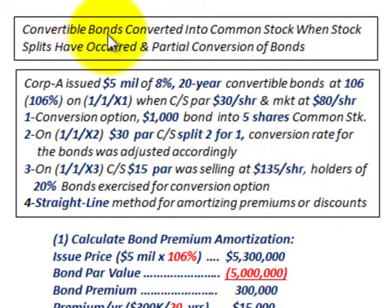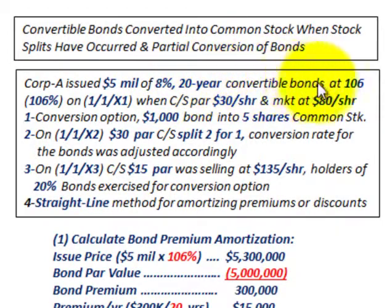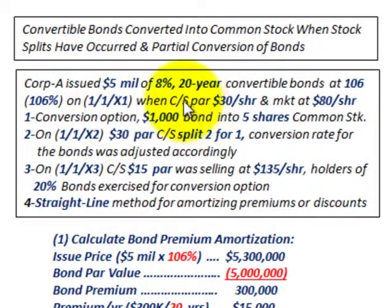What we're going to be going over here is convertible bonds that are converted into common stock when stock splits have occurred, and we're going to be looking at a partial conversion of the bonds. Corporation A issued $5 million worth of bonds at par value, at an 8% interest rate, and they're going to be 20-year convertible bonds issued at 106% of par, issued on 11x1 when the common stock par value per share was $30 per share.